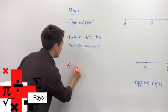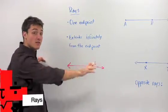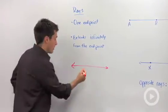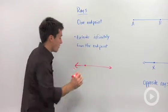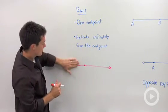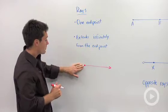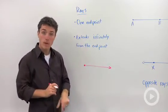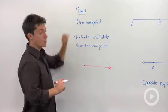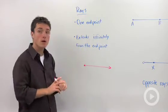If we had a line, so it extends infinitely in either direction, and I picked an endpoint somewhere, and I erased everything that extended beyond that endpoint, what I've just created is a ray. So a ray has one endpoint,